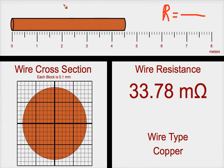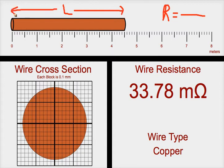If we want to look at the resistance of a wire, the resistance of the wire depends on three main factors. One factor is the length of the wire. Longer wires are going to have more resistance.